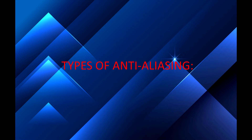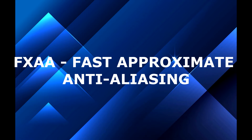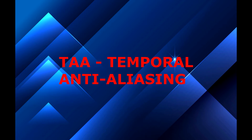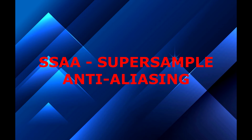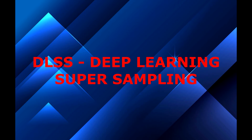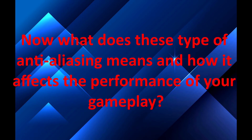Types of anti-aliasing. There are many different types of anti-aliasing: FXAA (Fast Approximate Anti-aliasing), MSAA (Multi-Sample Anti-aliasing), TAA (Temporal Anti-aliasing), SSAA (Supersample Anti-aliasing), MLAA (Morphological Anti-aliasing), and DLSS (Deep Learning Supersampling). There are actually way too many more.